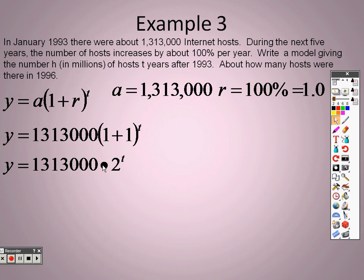So it's 1 plus 1, and we have the t in there. So really it's 1,313,000 times 2 to the t. This is write a model, which we have. About how many hosts were there in 96? Well, it started in 93 and now they want to know how many it is in 96. How many years is the difference between there?